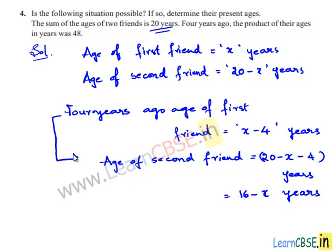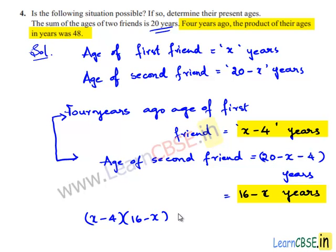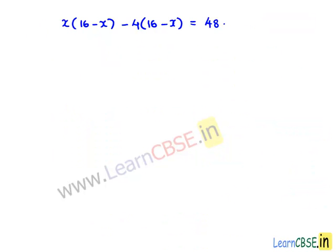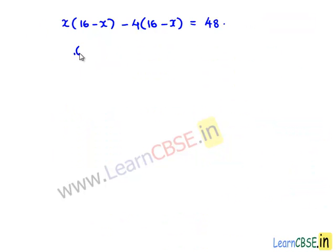The product is equal to 48. So we can write x times (16 minus x) minus 4 times (16 minus x) is equal to 48. Now, this becomes 16x minus x² minus 64 plus 4x is equal to 48.